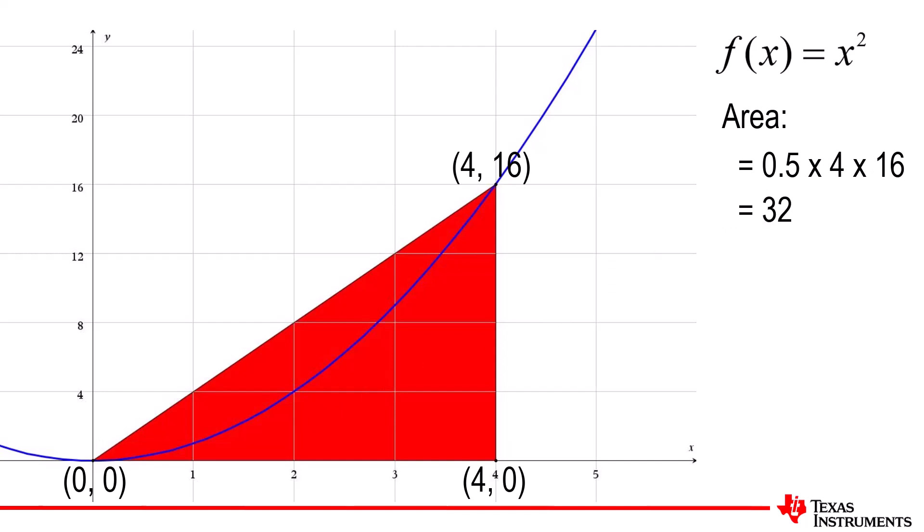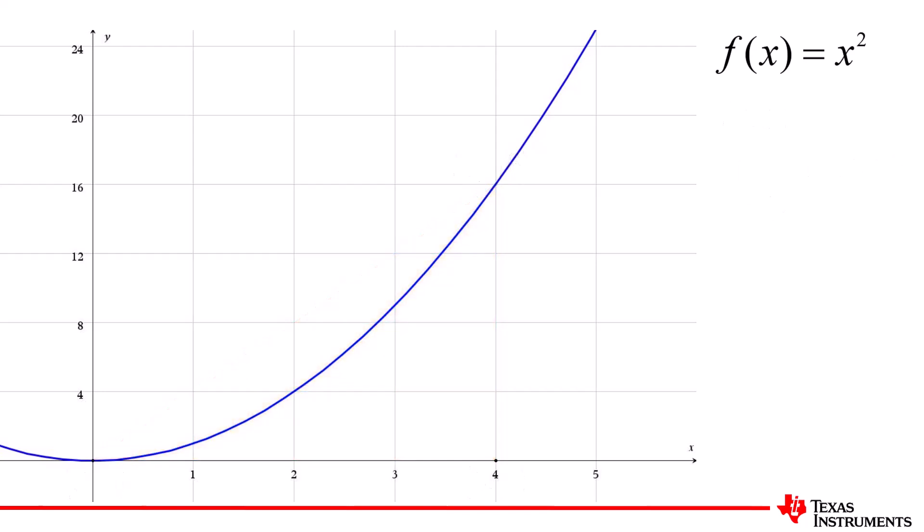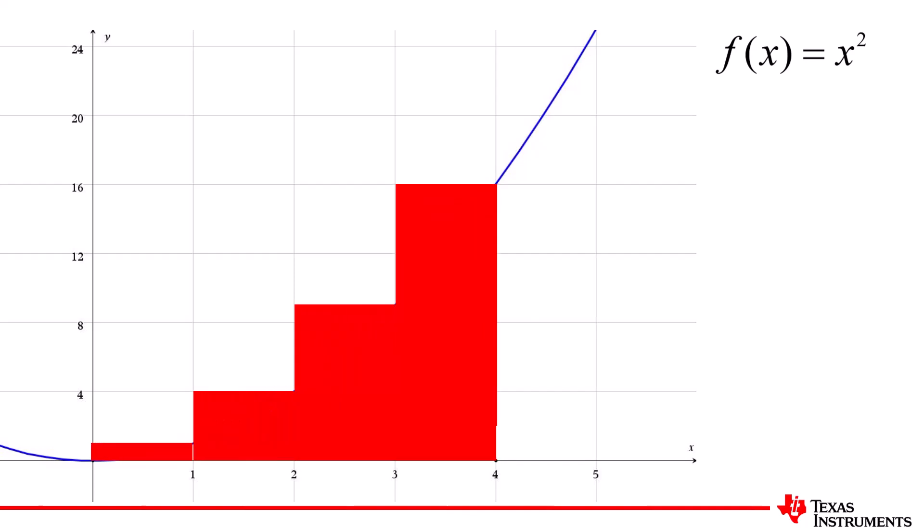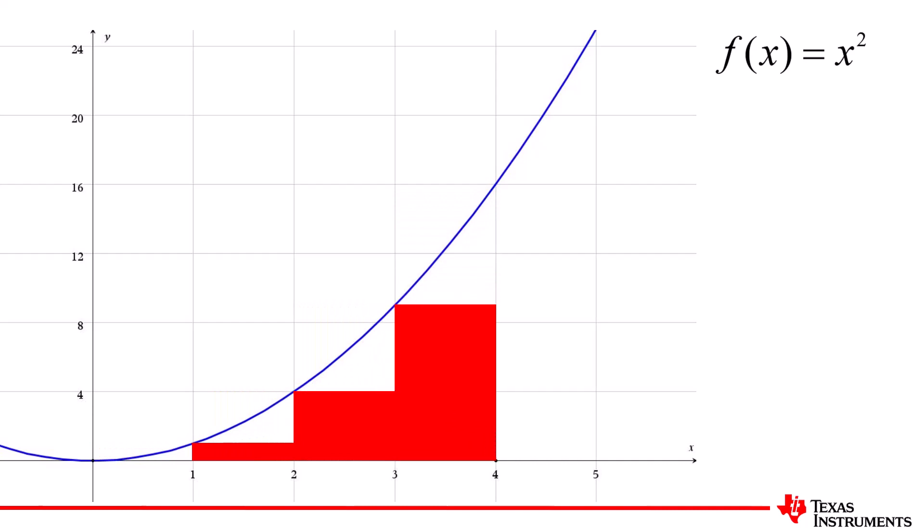A slightly better approximation would be to use a series of rectangles. We need to make a choice. The rectangles could be bounded by the function on the left or on the right. We'll start with left-bound rectangles of width 1 unit. The height of each rectangle is defined by the function.